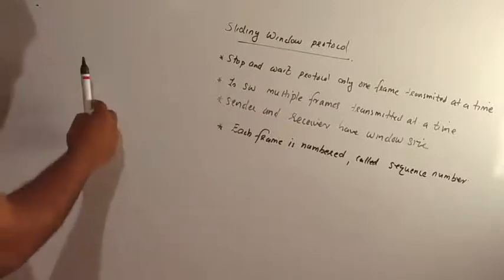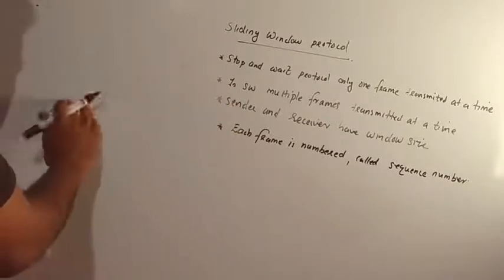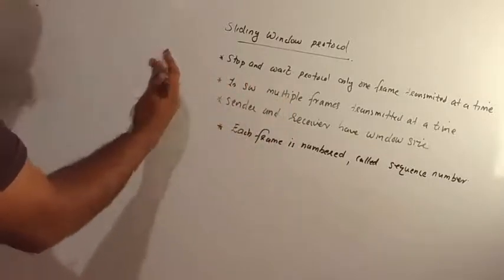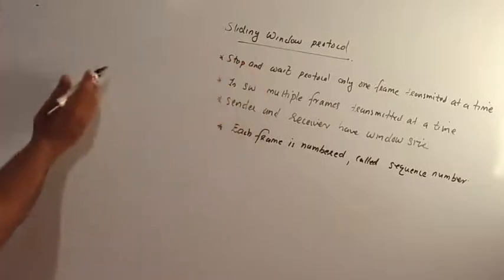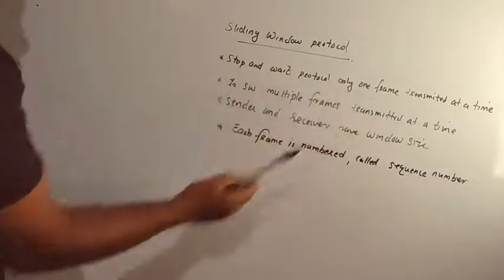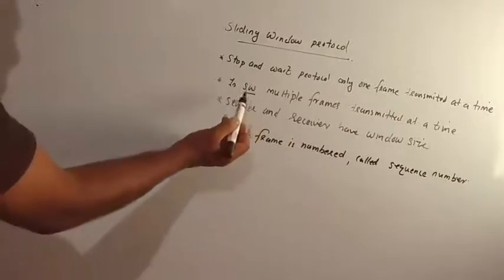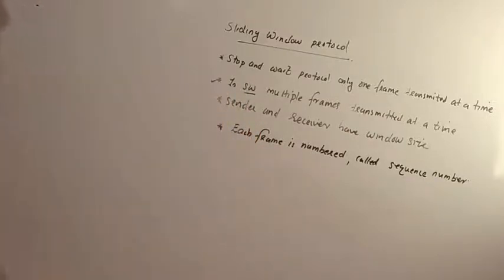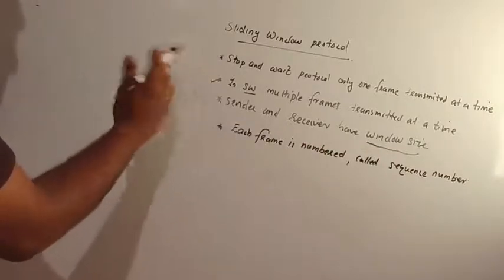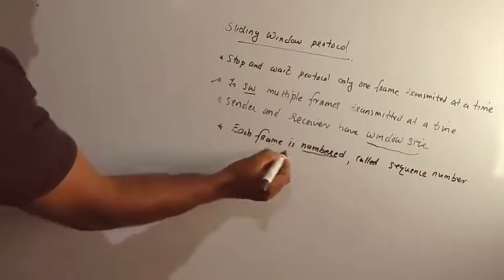The stop and wait protocol has very low efficiency. In the sliding window protocol, multiple frames are transmitted. These are multiple frames transmitted to the stop. We have to load the window size. Each frame has a number — each frame is assigned a sequence number.